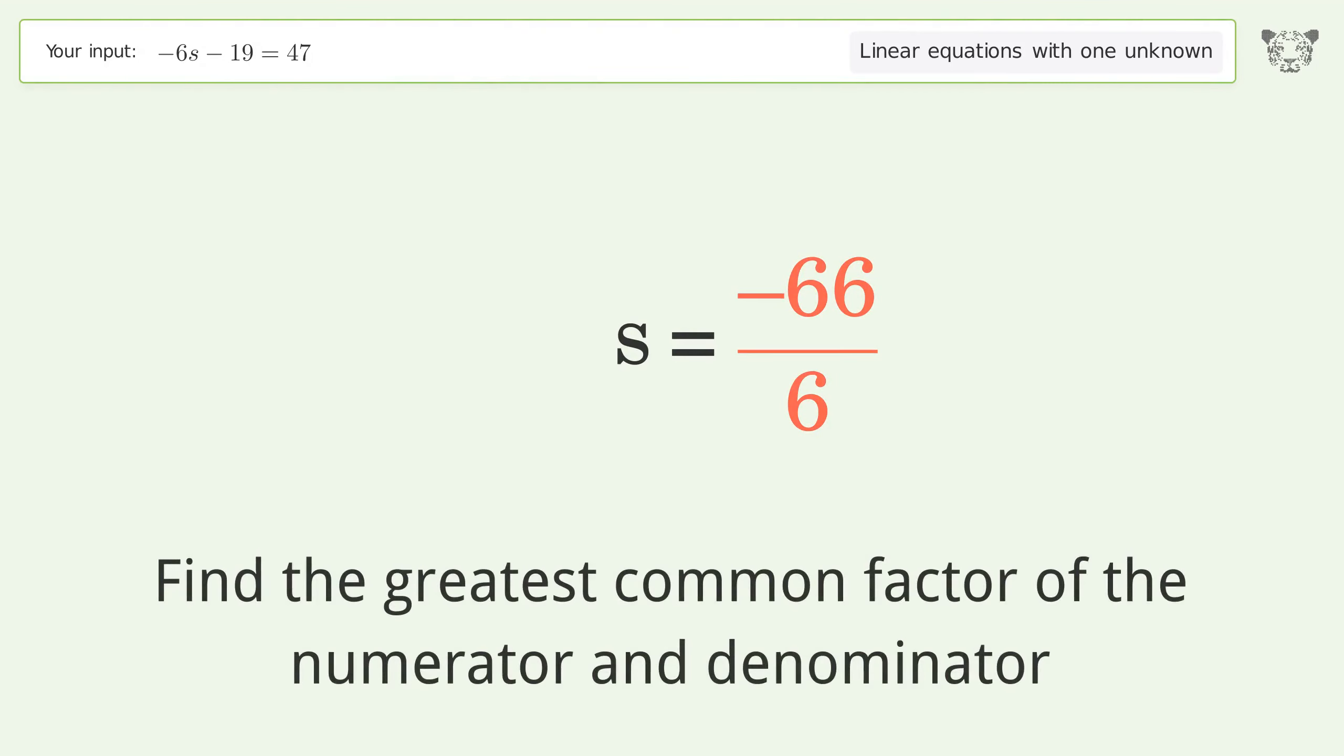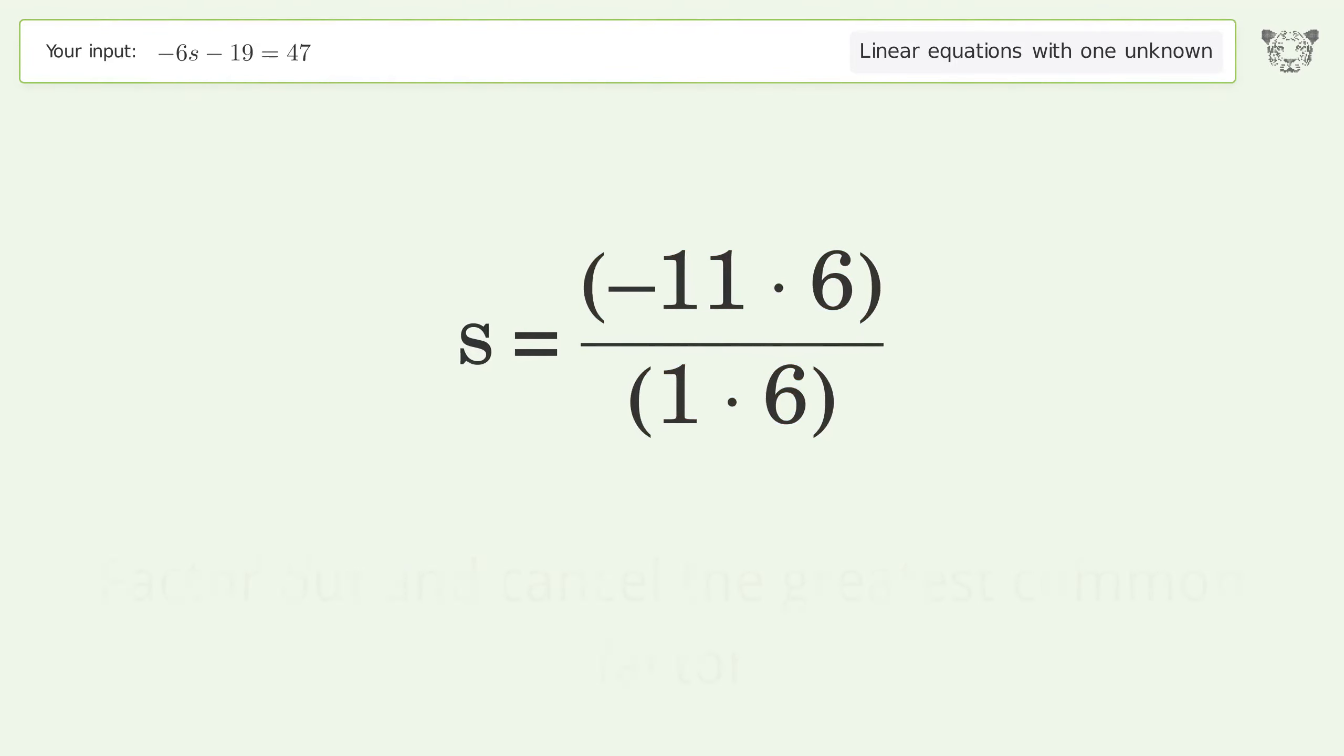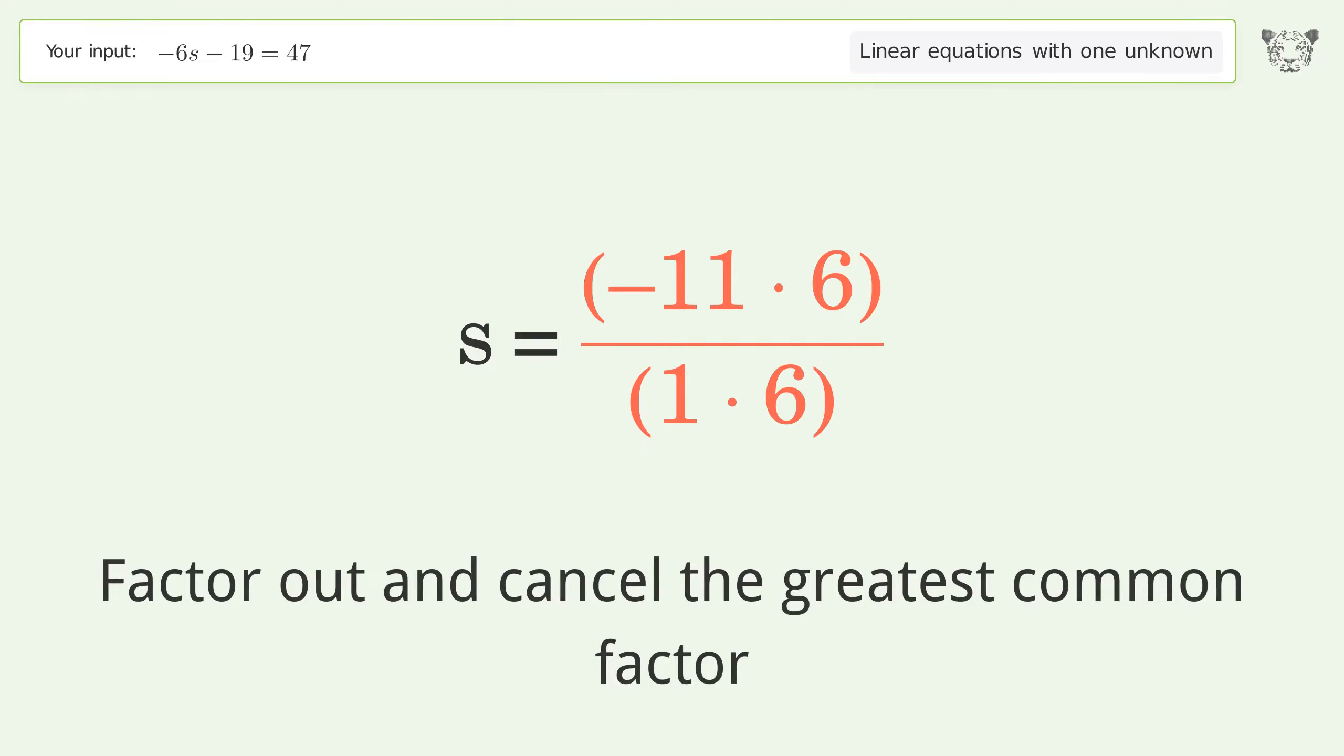Find the greatest common factor of the numerator and denominator, then factor out and cancel the greatest common factor.